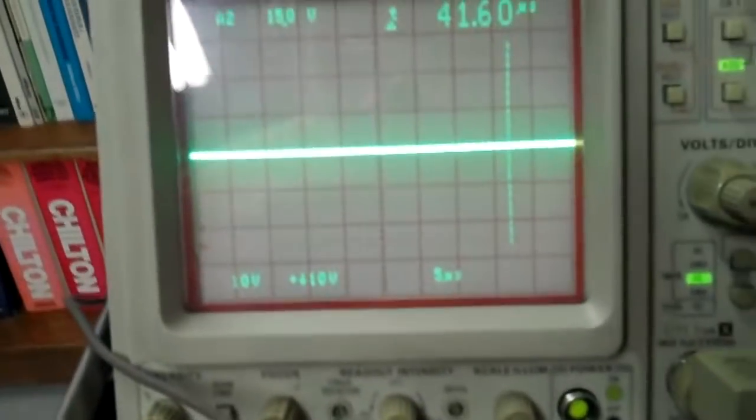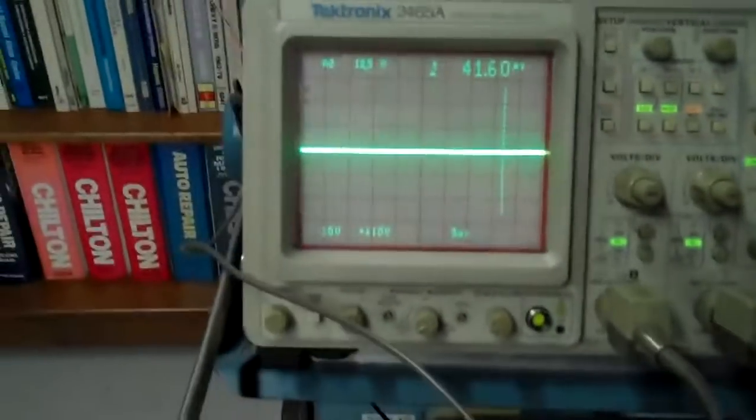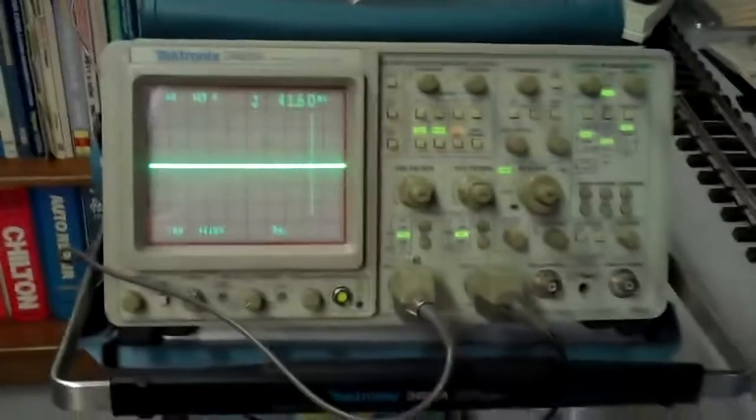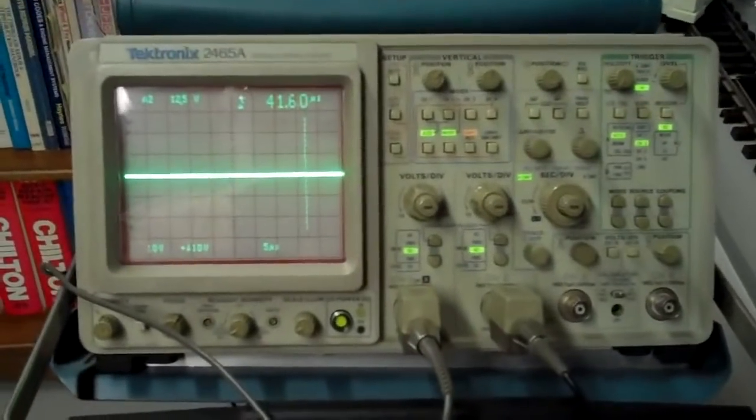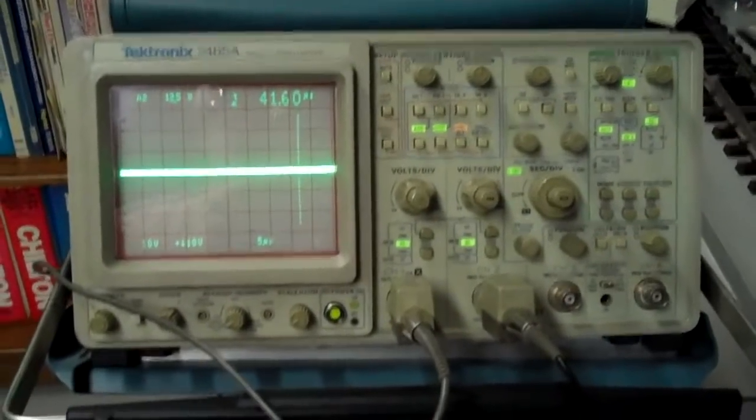And change polarity back to where it was. And there you have it. It looked like a fairly clean waveform. It was just a flat line level, without any noise on it.